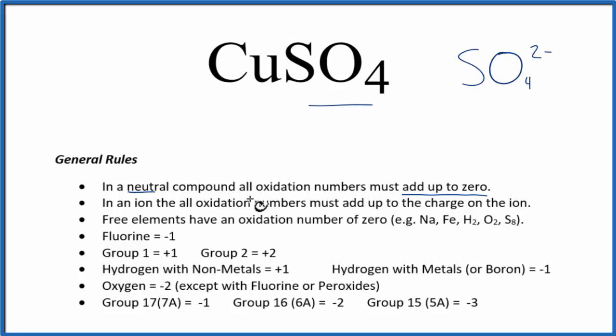So in a compound like this, we said all the oxidation numbers add up to zero. We also know that in an ion, all the oxidation numbers add up to the charge on the ion. So if we have this two minus here, that means the copper is going to have to have an oxidation number of two plus.